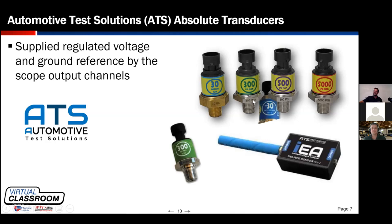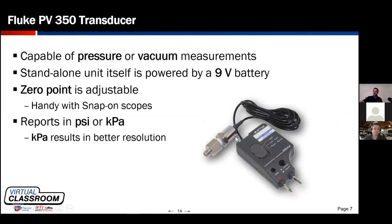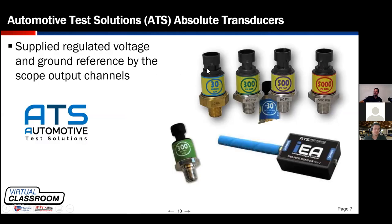You might ask: why would I want a 300 psi transducer when I could have a 500 psi transducer? The answer is screen resolution — you get more of a prettier picture painted on the screen. I'm going to demonstrate that shortly.